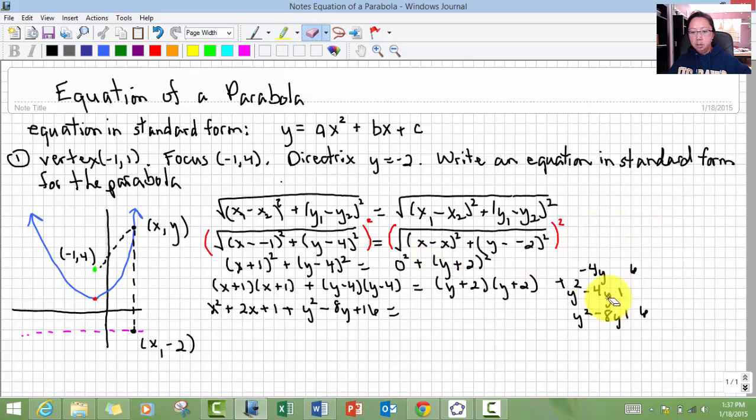Now I need this to distribute. Now this time I'm going to do it by distributing y plus 2 times y plus 2. Positive 4. 2 times y is positive 2y. Bring down a 0. Y times 2 is 2y. That's positive 2y. Y times y is y squared. Now we add like terms. 4, 4y, y squared. So here we go.